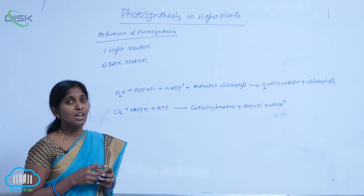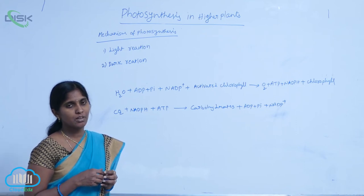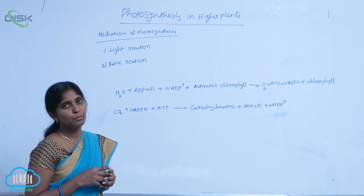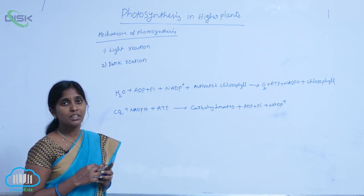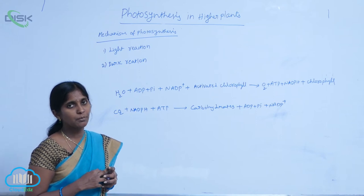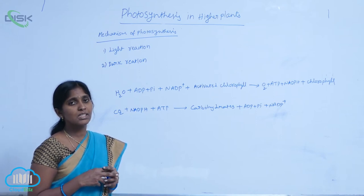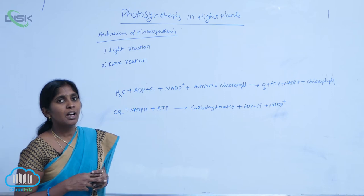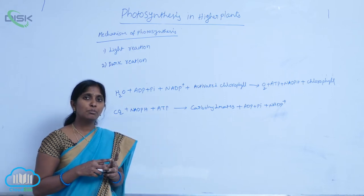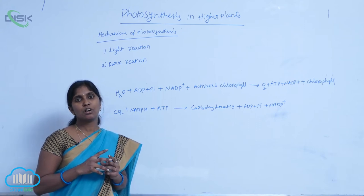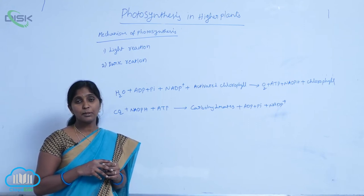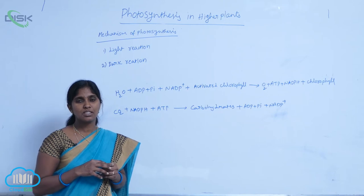First is absorption of light. Here, the water molecule is split and oxygen is released. High energy intermediate compounds are released. Finally, ATP and NADPH2 are produced, which is the assimilation energy.